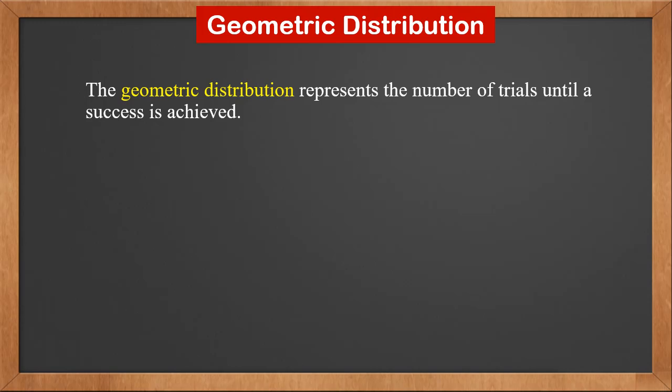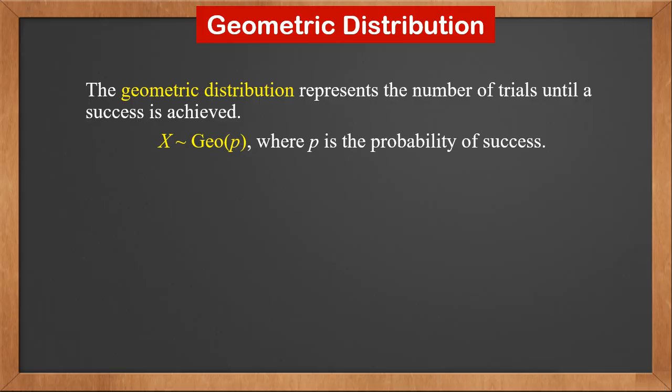The geometric distribution represents the number of trials until a success is achieved. If random variable X follows a geometric distribution, we write it as X ~ Geo(p), where p is the probability of success. P(X = x) is (1 minus p) to the power x minus 1, times p. X can be 1, 2, 3 and so on.